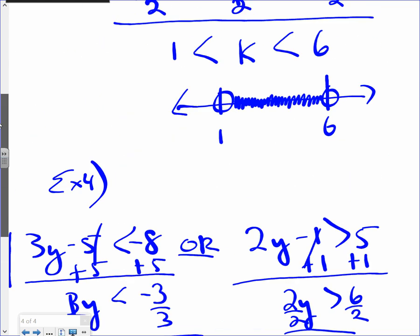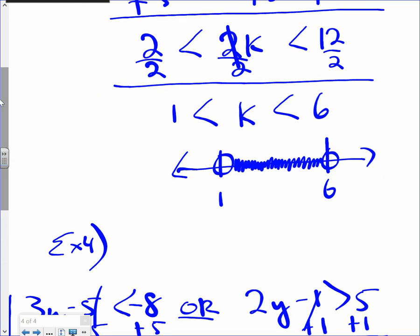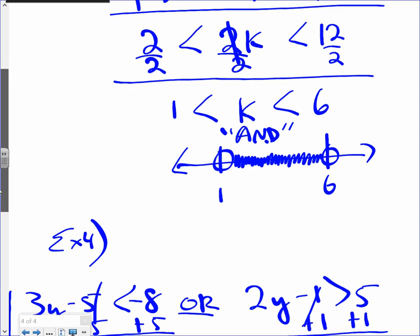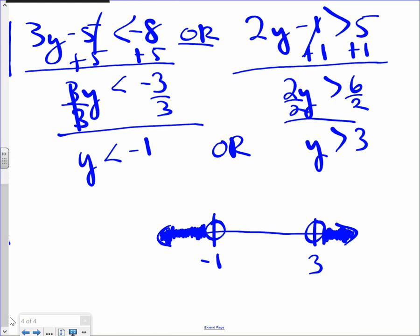So right here, this has to do with and. Look at k is greater than one and. Look at the word and. Less than six. k is two things at one time. It's greater than one and less than six. So we shade in between two numbers. When you're dealing with an or problem, opposite directions.